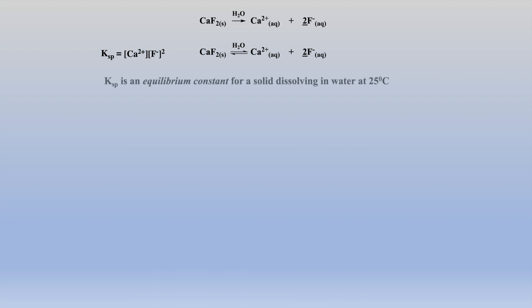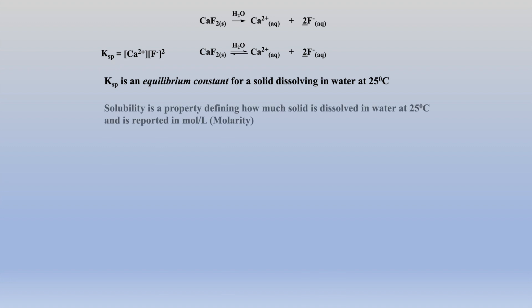At this point we should define the solubility product constant and solubility for a particular ionic compound in pure water, which are usually recorded at 25 degrees Celsius. The solubility product is an equilibrium constant derived from the solubilities, which are amounts of solid dissolved in water and are given in moles per liter. It is important to know how to go back and forth between solubility product and solubility values.